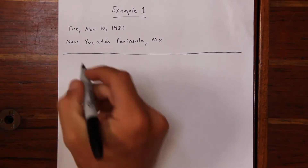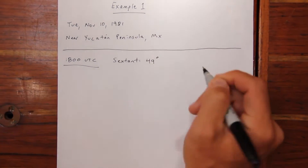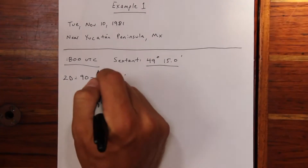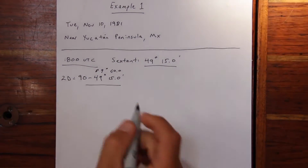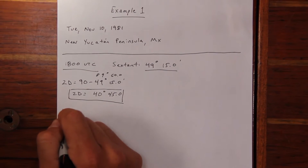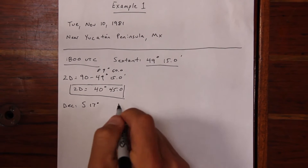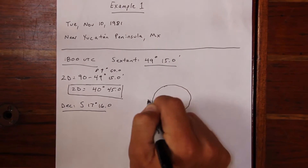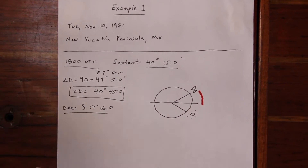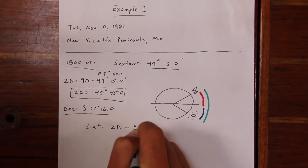All our example problems use the 1981 Nautical Almanac for consistency. In this case we're near the Yucatan Peninsula in Mexico in the Northern Hemisphere. The time is 1800 UTC, and our sextant reads 49 degrees and 15 minutes. First, calculate zenith distance — 90 degrees minus the sextant height. Using the trick of converting 90° to 89°60' makes the math easy, giving a zenith distance of 40 degrees and 45 minutes. Next, pull declination from the Nautical Almanac: South 17 degrees and 16 minutes. Drawing our diagram, we see we're in the opposite hemisphere from the Sun's geographic position, so latitude equals zenith distance minus declination.